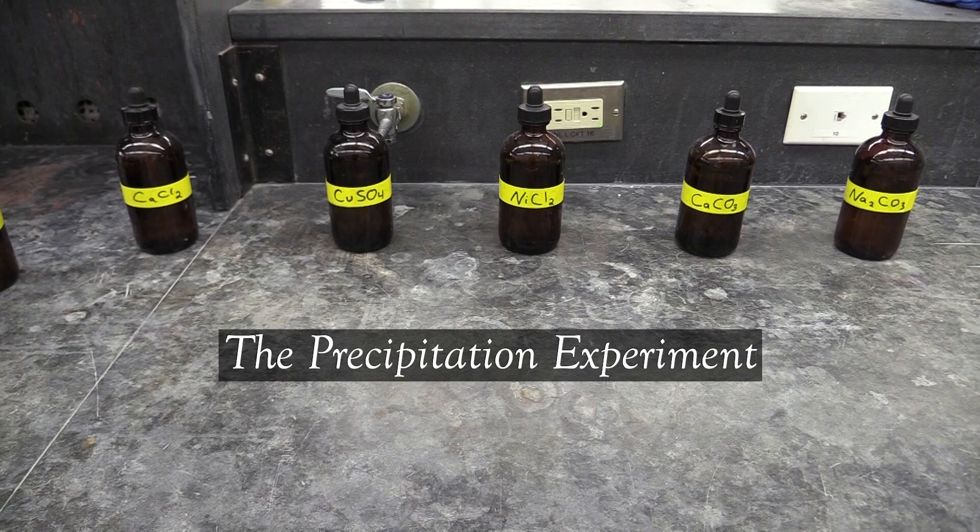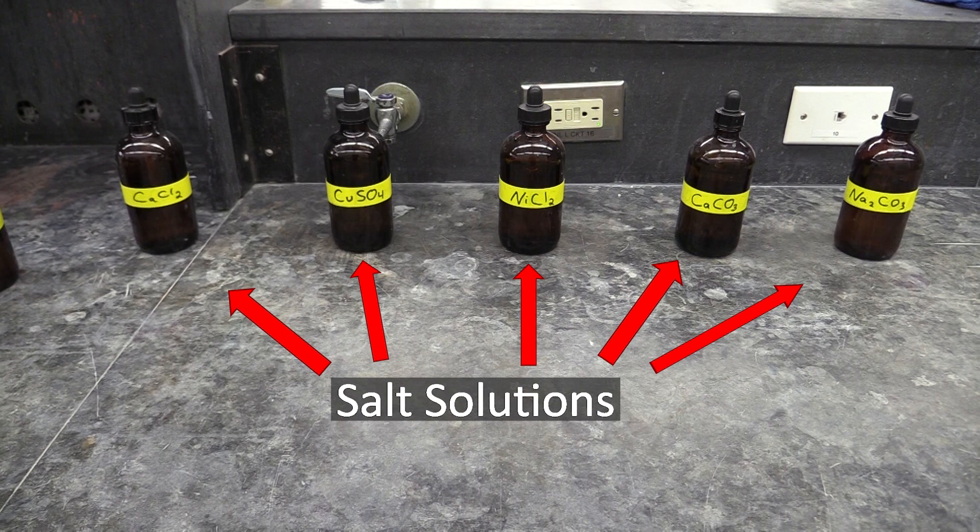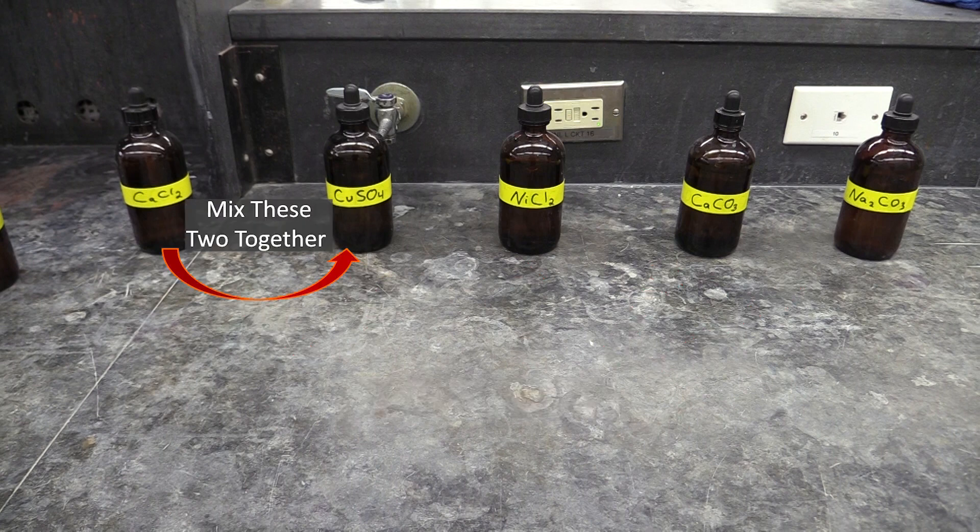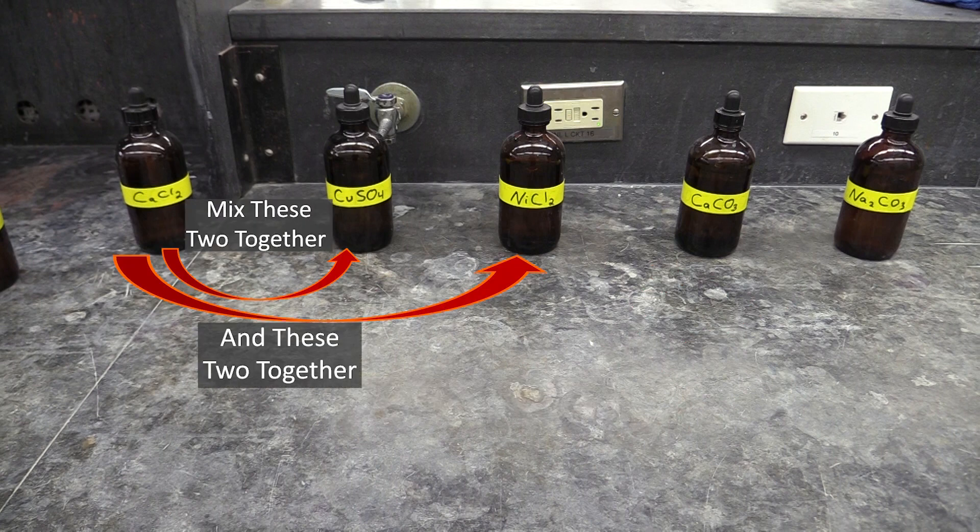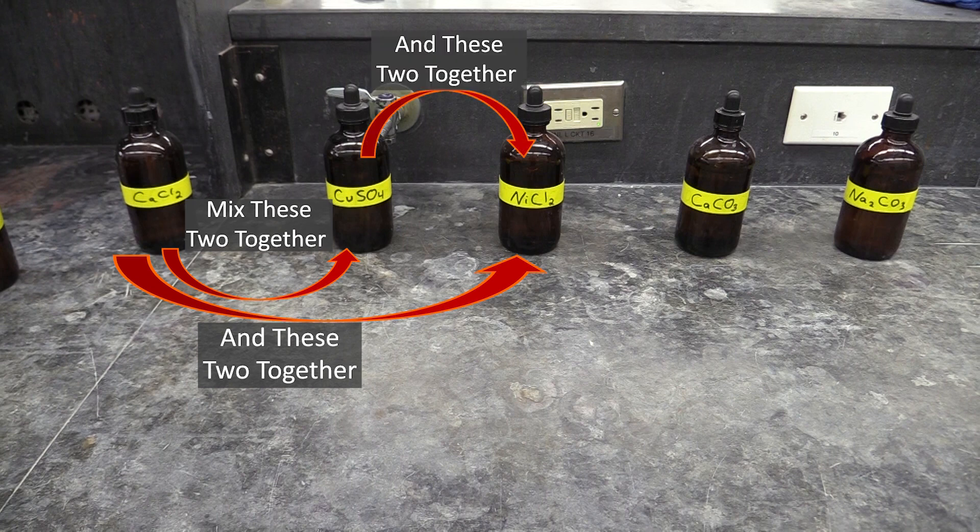The first experiment in your procedure involves the precipitation of insoluble salts. In this one, you will take several different salt solutions, mix them together two at a time in every possible combination they can be mixed, and see whether or not you get a precipitate.